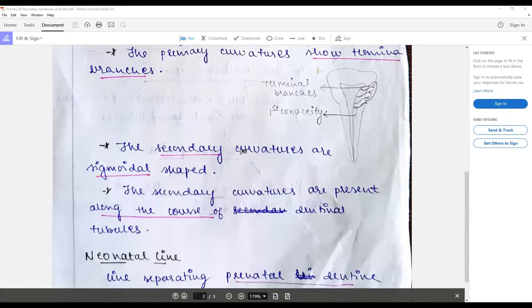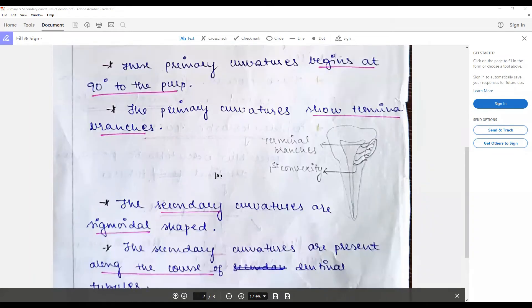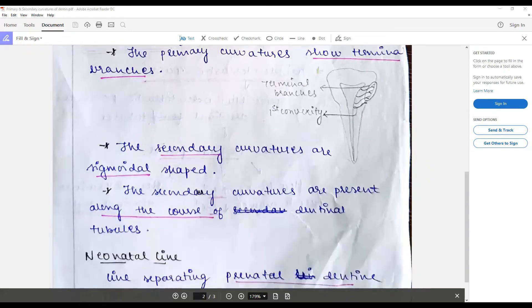The secondary curvatures are sigmoidal in shape and are present along the entire course of the dentinal tubules.